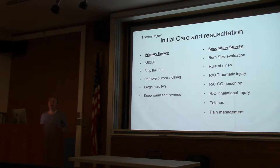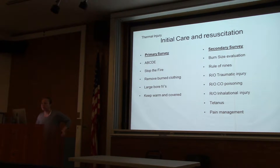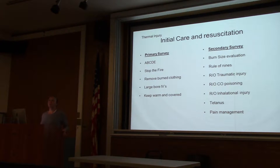Burn injury is a traumatic injury. We start with ATLS protocol: airway, breathing, circulation, disability, and exposure. Stop the fire — stop the patient's clothes that are on fire. Very importantly, cut the clothes off quickly to get rid of the burning material because it just makes the burn worse. Insert large-bore IV catheters. Keep the patient warm and covered, because they've lost their ability to regulate temperature through the burn.